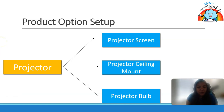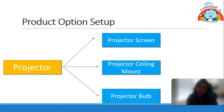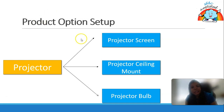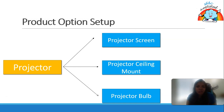We have already understood what product bundle, product option, and product feature are. Now let's deep dive into product option setup. I'll take an example of a projector. A projector is a product and it comes along with a screen, ceiling mount, and bulb as a bundle. These items can also be sold individually — for example, if a screen is broken it can be purchased separately — but when talking about the projector bundle, these become product options.